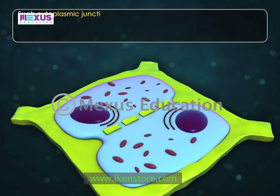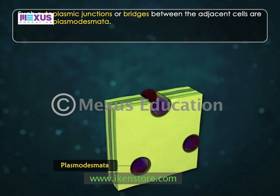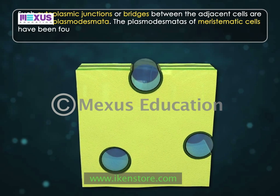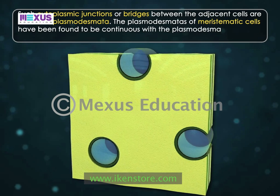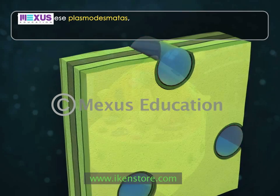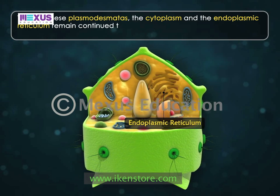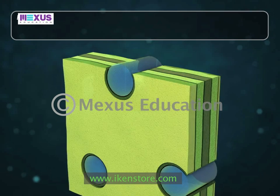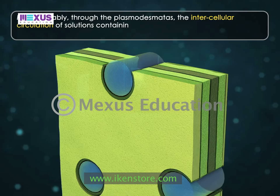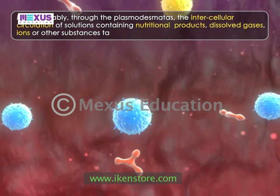Such cytoplasmic junctions or bridges between the adjacent cells are known as plasmodesmata. The plasmodesmata of meristematic cells have been found to be continuous with the plasmodesmata of adjacent cells. Through these plasmodesmata, the cytoplasm and the endoplasmic reticulum remain connected to adjacent cells. Most probably, through the plasmodesmata, the intercellular circulation of solutions containing nutritional products, dissolved gases, ions, or other substances takes place.